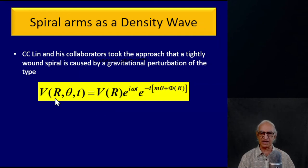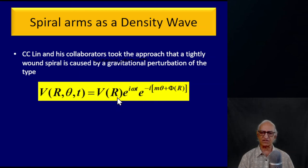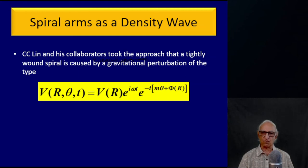Similarly, C.C. Lin and his collaborators proposed that a tightly wound spiral arm in a galaxy is caused by a spontaneously arising gravitational perturbation. Any perturbation has a radial part, an angular part, and a time dependence. The time dependence is given by e^(i omega t). The spatial dependence is given by v(r) — an amplitude. There is a phase factor e^(i times phase), and that phase consists of two terms: a constant phase m times theta, where m can be 2 or 4, and a radial phase capital phi which is a function of radius.